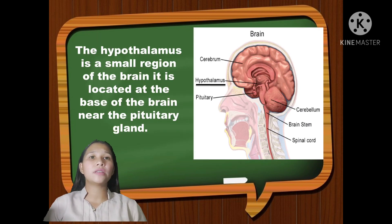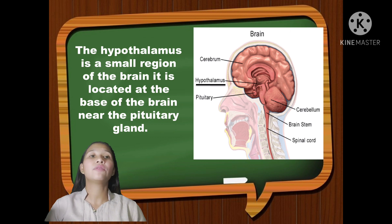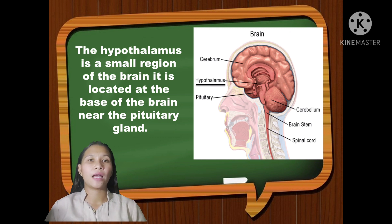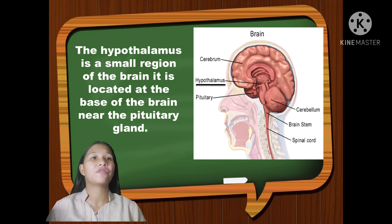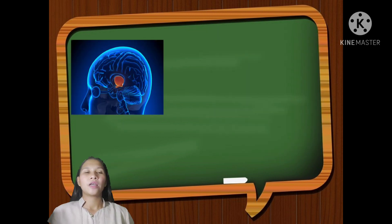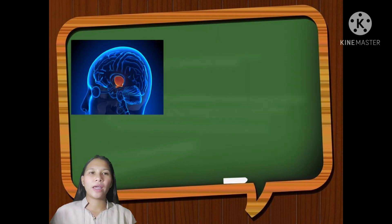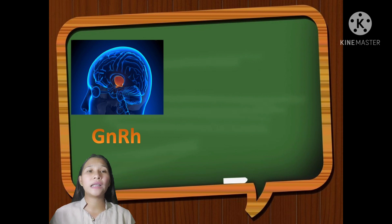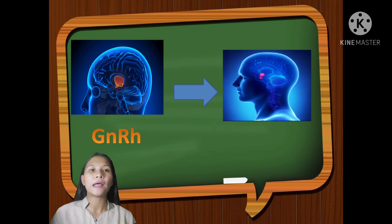The hypothalamus is a small region of the brain located at the base of the brain near the pituitary gland. It plays a crucial role in many important functions, including the releasing of hormones. Puberty begins when the hypothalamus starts to release GnRH, or the gonadotropin hormone, which travels to the pituitary gland.